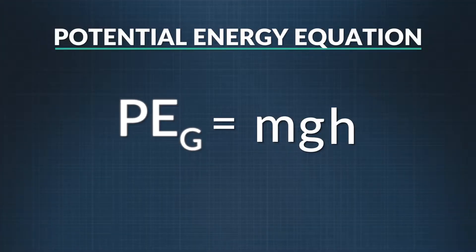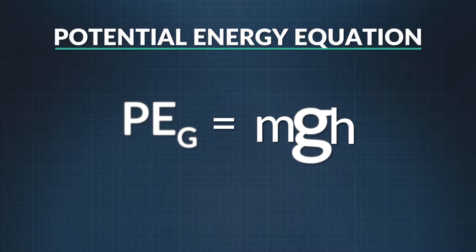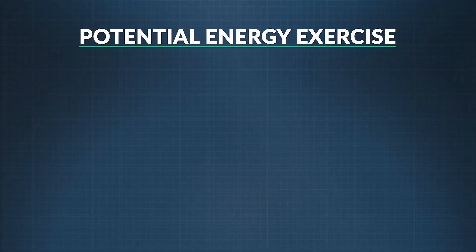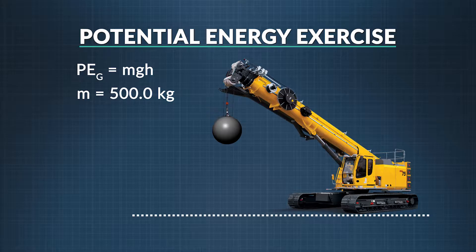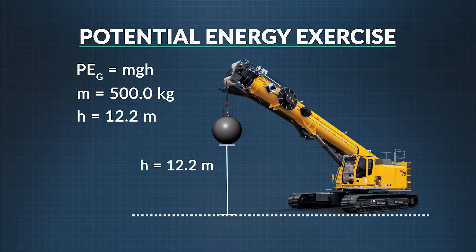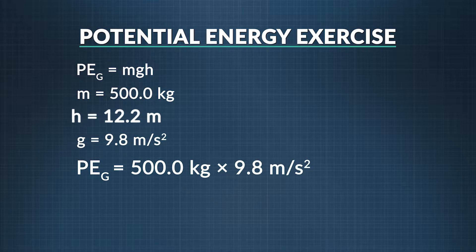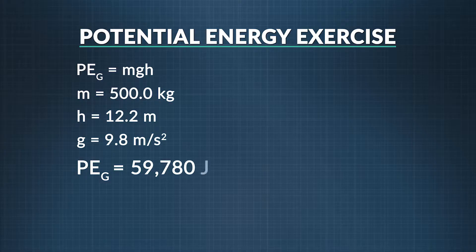Gravitational potential energy equals the mass of the object M, times gravitational acceleration on Earth G, times the height of the object above the reference point H. For a 500.0-kilogram wrecking ball on a crane 40 feet in the air — that's 12.2 meters — set the ground as your zero reference point, or ground zero. Take the mass, 500.0 kilograms, multiply by 9.8 meters per second squared, times the height, 12.2 meters. Our gravitational potential energy is 59,780 joules, or with significant figures, 5.98 times 10 to the fourth joules.